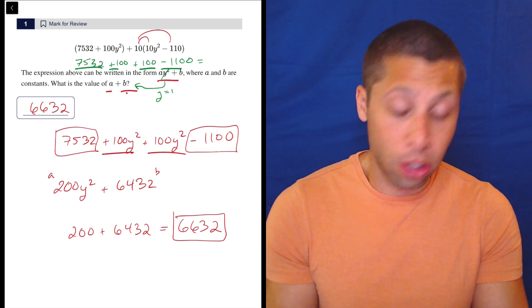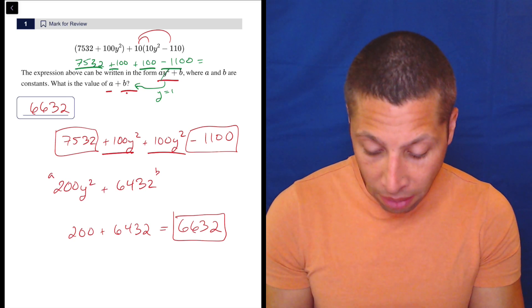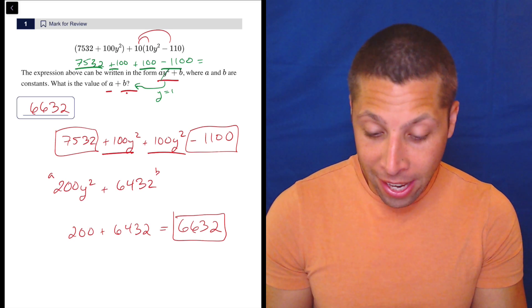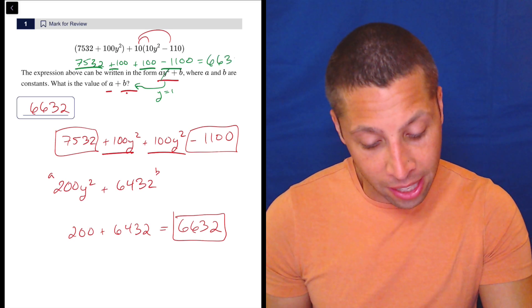But in this case, we could go right to the calculator and just do it all in one shot. So 7532 plus 100 plus 100 minus 1100 is same thing, 6632.